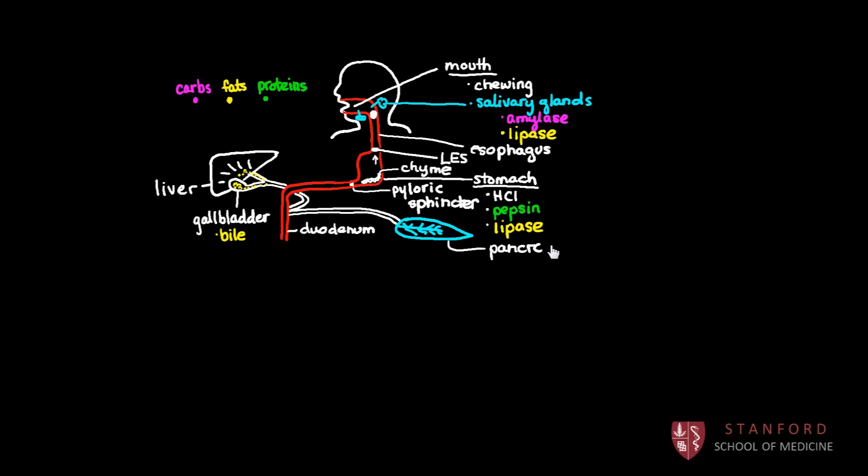The pancreas is really important. It secretes probably the most important digestive enzymes into the small intestine. And those enzymes are amylase. And this is now pancreatic amylase. It also secretes pancreatic lipase, another way of digesting fat. And then it secretes two enzymes that are used in the digestion of protein. One is called trypsin and its cousin, chymotrypsin. So all of that exciting stuff happens in the duodenum.